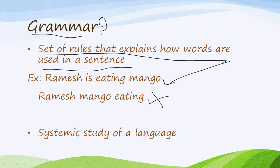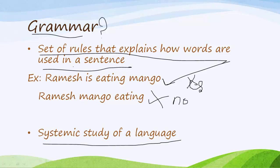Set of rules means there are rules to write like 'Ramesh is eating mango.' There are no rules to write 'Ramesh mango eating.' It is also called a systematic study of a language — it explains how to use a language, such as English.